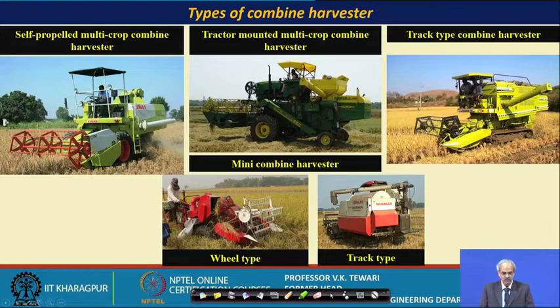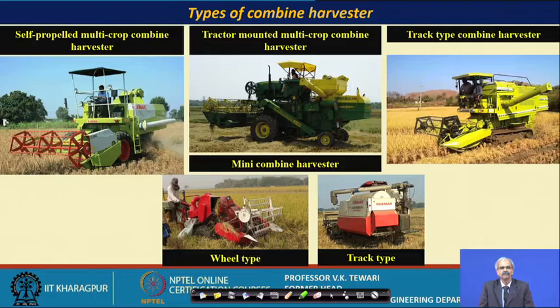There are various types of combines available. You might ask why big machines are needed in a country where 60 percent of farmers have smaller fields of less than one hectare. Engineering economics comes into play here — only about 10 percent of farms are very large.